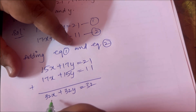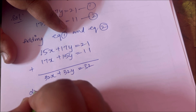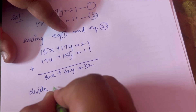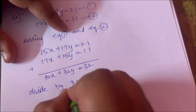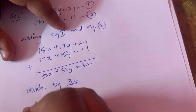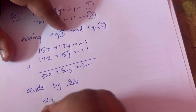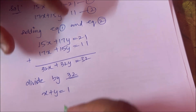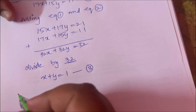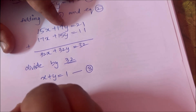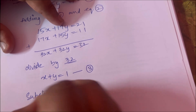The sum of the right-hand sides gives 32. Now we take 32 as common and divide by 32. After dividing by 32, it becomes x plus y equals 1. This is equation 3.